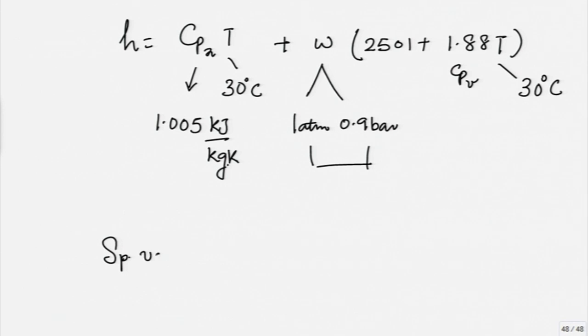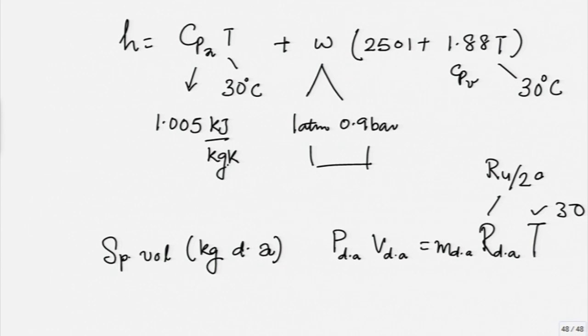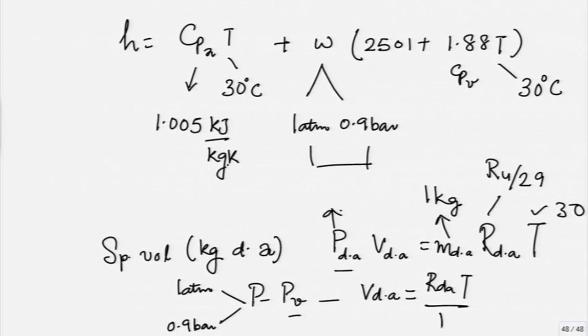And finally, if I want specific volume, again this is per kg of dry air. We will say P dry air times V dry air is equal to M dry air times R dry air into T. T is 30. This is universal gas constant by 29. This we take as 1 kg and this is now going to be calculated as P minus PV and you will have two values. If P is one atmosphere, you get a different value for P dry air and if P is 0.9 bar, you get a different value for P dry air. In both cases, PV is the same, but P dry air changes and the specific volume would be just R dry air into T upon P dry air that we need to calculate.